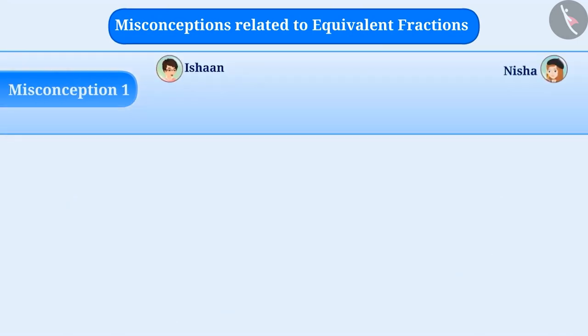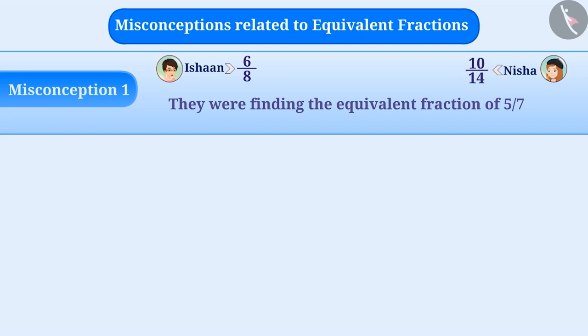Misconception 1. Ishan and Nisha were finding the equivalent fraction of 5/7. Ishan has written it as 6/8 and Nisha has written it as 10/14. Find out who wrote the correct equivalent fraction of 5/7.